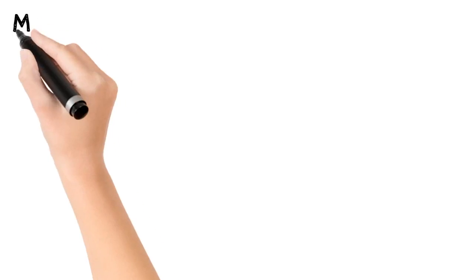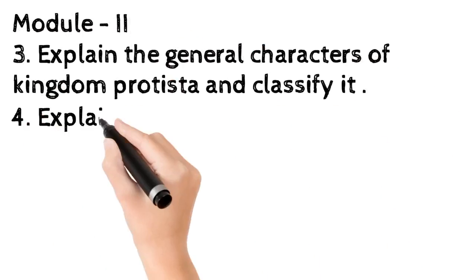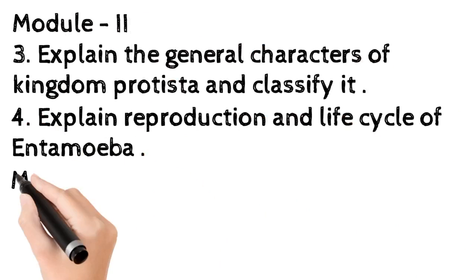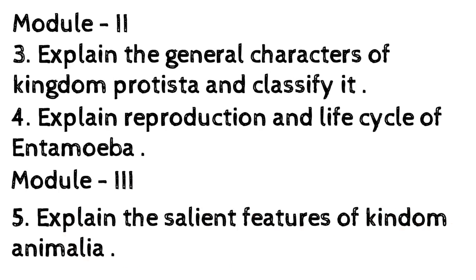Module II: 3. Explain the general characters of Kingdom Protista and classify it. 4. Explain reproduction and life cycle of Entamoeba. Module III: 5. Explain the salient features of Kingdom Animalia.